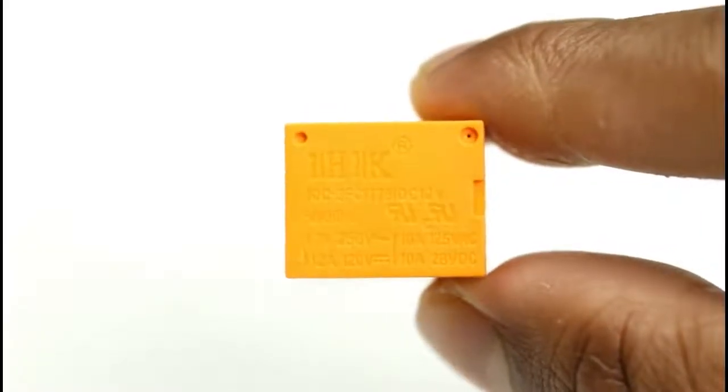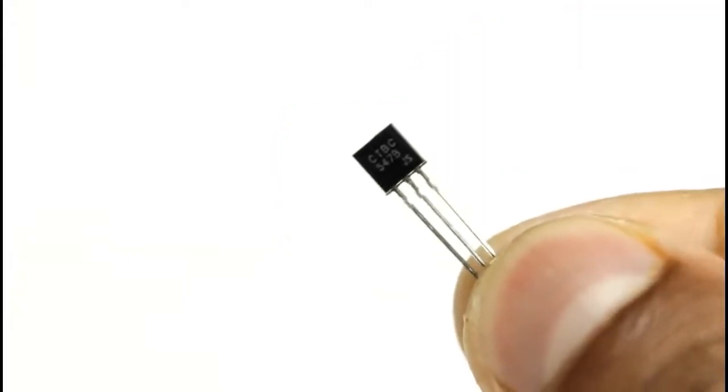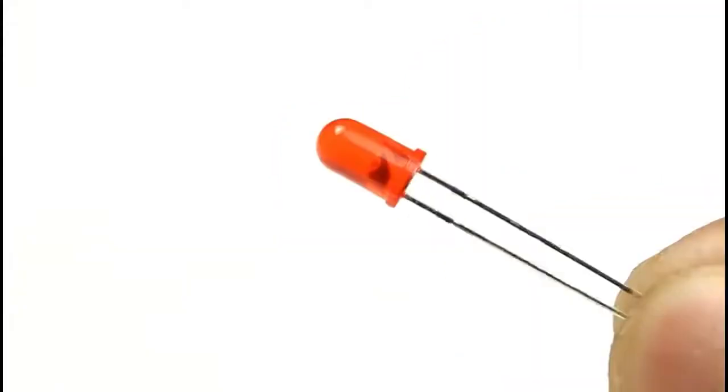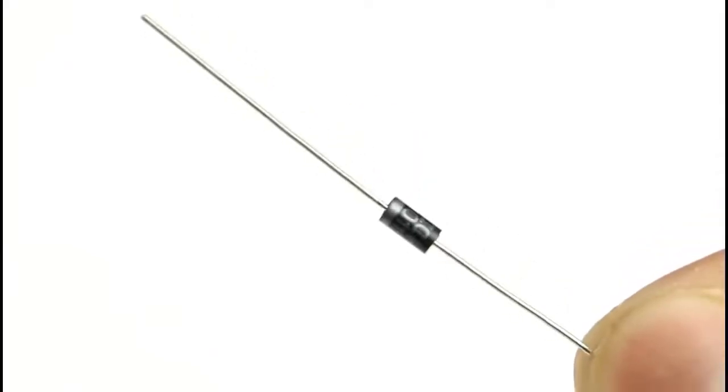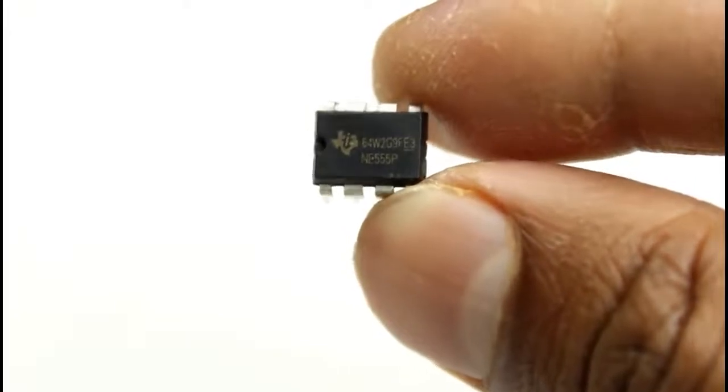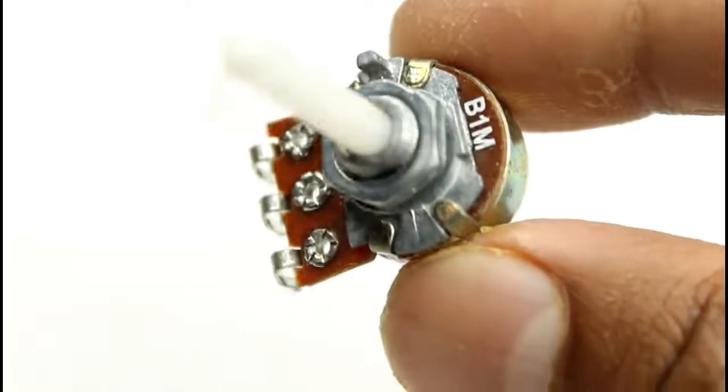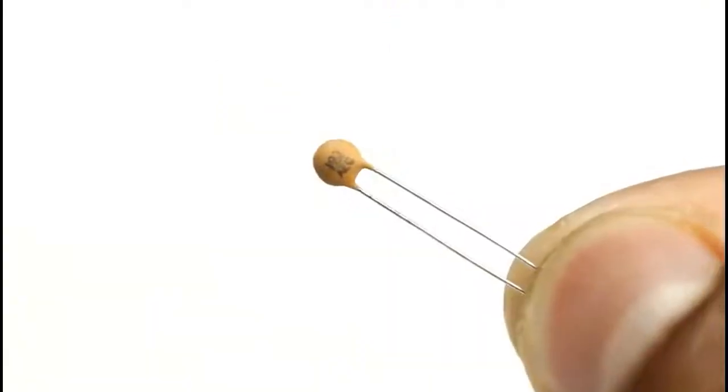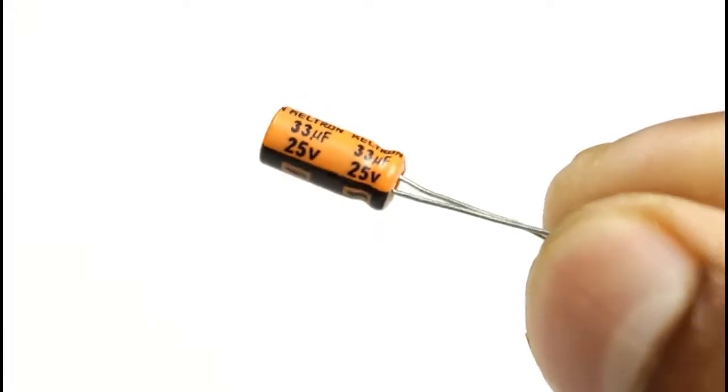To make this circuit we will need a 12 volt SPDT relay, a BC547 NPN transistor, a LED you can choose any color of LED, a 1N4007 diode, a triple 5 timer IC, an 8 pin IC base. This is optional, you can avoid this. A 1 mega ohm potentiometer, a 103 pF capacitor.